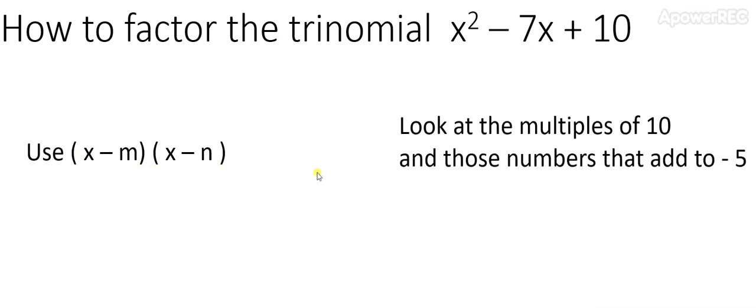We're going to follow two steps. First, we have to look at the multiples of 10. So create a pair of numbers, or generate a pair of numbers, that when you multiply them together, give you 10 as a product. But at the same time, those two numbers have to add up to give me negative 7.